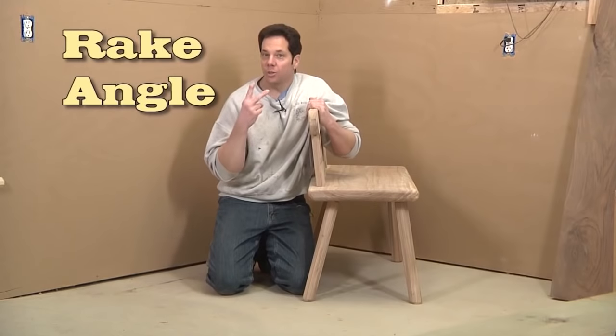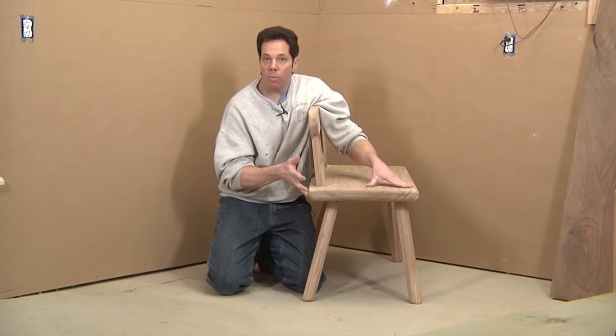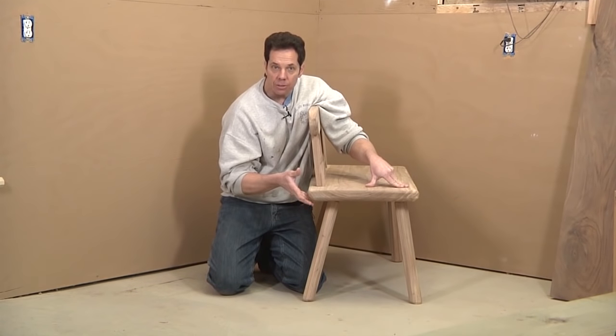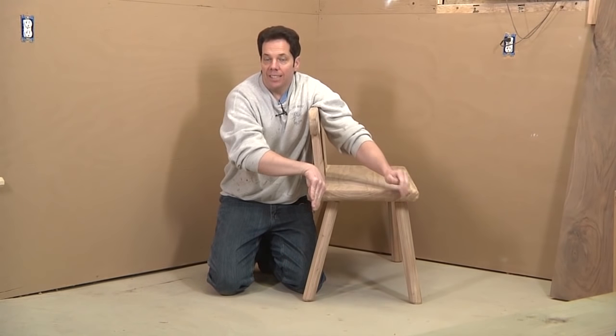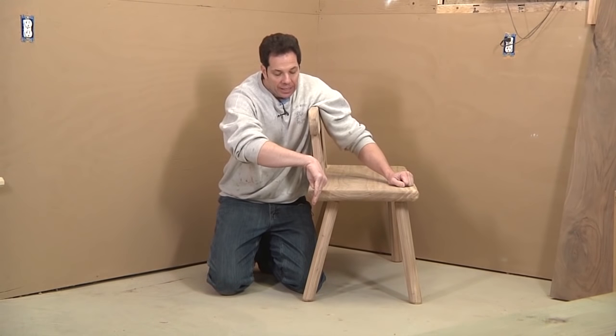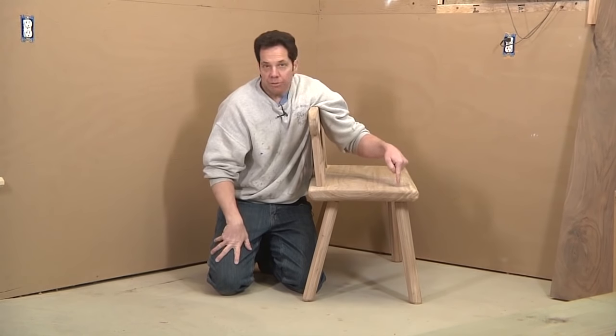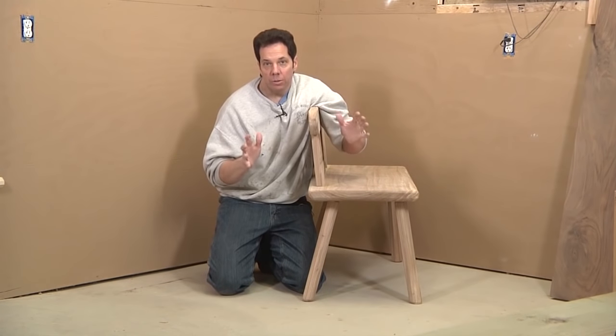Two. The second angle is rake. Rake is looking at the chair or the bench from the side view, and it has to do with how much the legs are kicked out. Note that the back leg has more of a rake angle than the front, and that has to do with the placement of the hole where it was drilled.